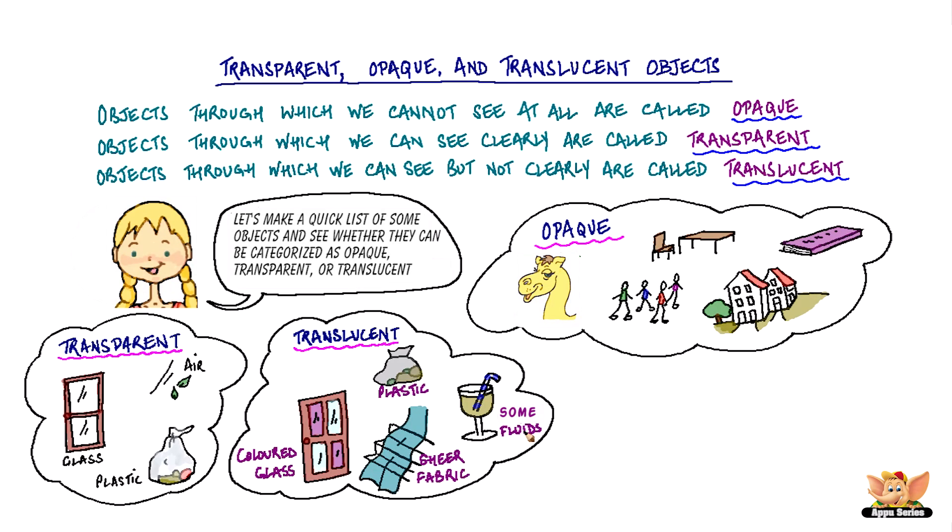So, we can see that objects can be opaque, transparent or translucent depending upon whether they allow light to pass through them completely, partially or not at all.